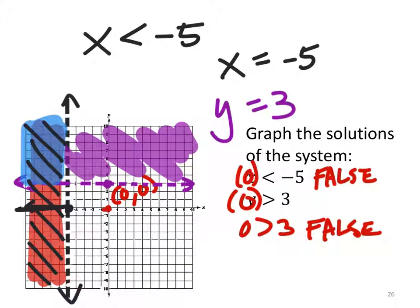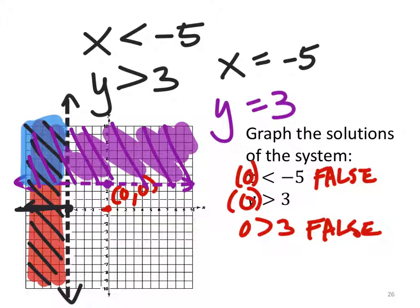On the other hand, we had y is greater than 3, which gave us this purple line right here. And any y value that's greater than 3 would be above it. So we shade it above that line, giving us where it crosshatches right here.